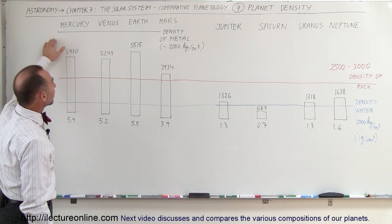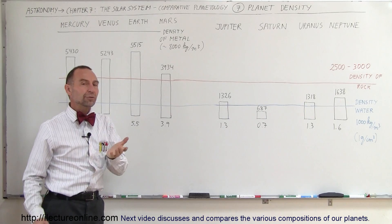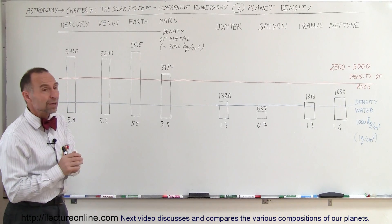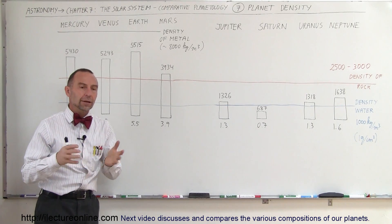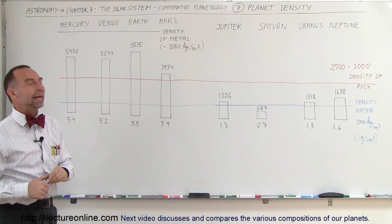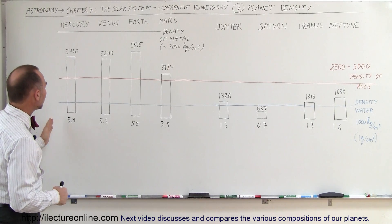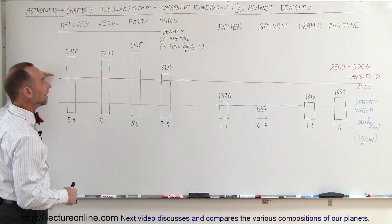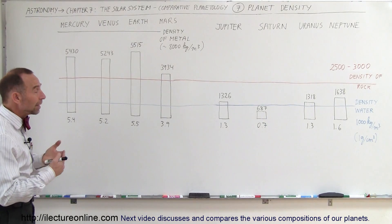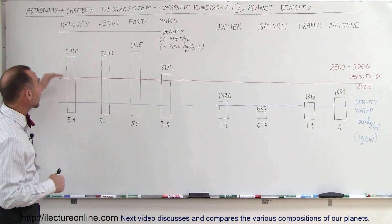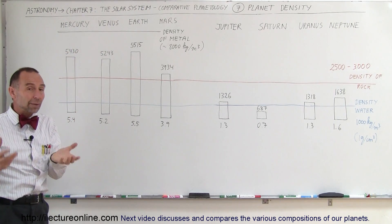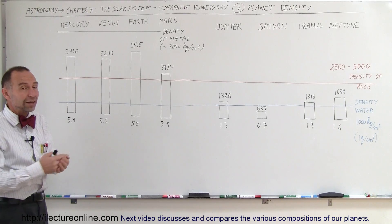Notice that the density of typical metals is about 8,000 kilograms per cubic meter. Of course there's some metals that are much more dense than that. Gold for example is more than 19,000 kilograms per cubic meter. But for metals such as copper, tin, cobalt, nickel, iron, those kind of metals have densities in the neighborhood of about 8,000 kilograms per cubic meter. Now you notice that the terrestrial planets have densities between the density of rock and the density of metal. And because of that we can surmise that the terrestrial planets are made up partially of rock and partially of metal. In fact since the density is about halfway between the density of rock and the density of metal we can say that they're probably made of about 50% rock and 50% metal.